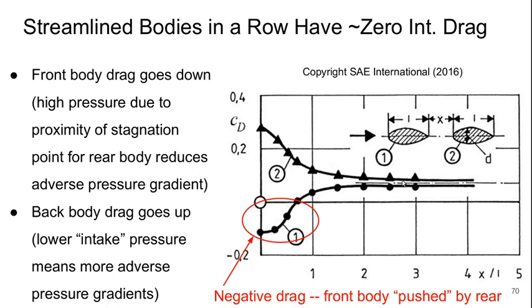The back body drag goes up as they get closer together because there's a lower intake pressure. So there's an even stronger adverse pressure gradient as the pressure has to recover to the back. But if I look at these two effects, they just about cancel out. And the net impact is that the interference drag is very close to zero regardless of the separation distance.